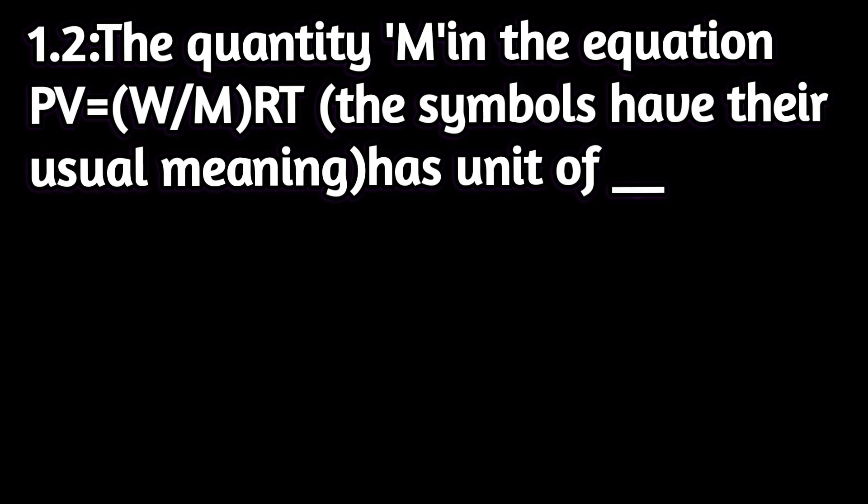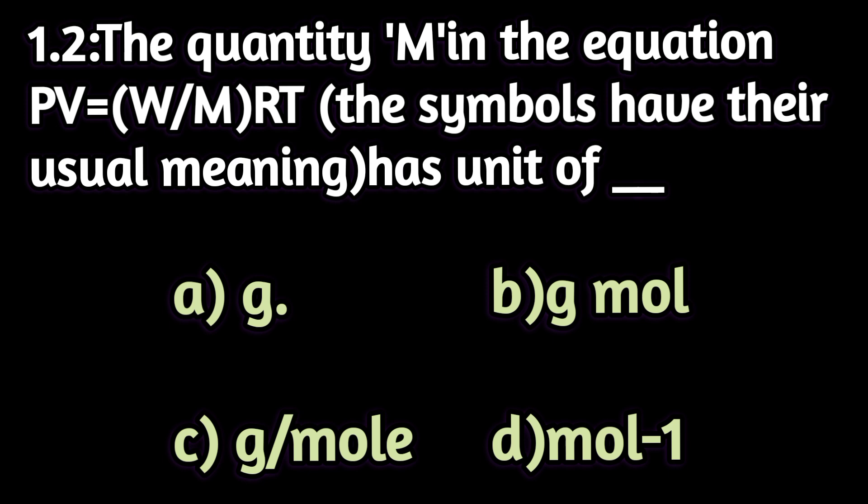Now let's move to question 1.2. The quantity M in the equation PV = (w/M)RT, where symbols have their usual meaning, has a unit of what? Option A: g, option B: g·mol, option C: gram per mole, option D: mole to the power minus 1. The right answer of 1.2 is option C, gram per mole.